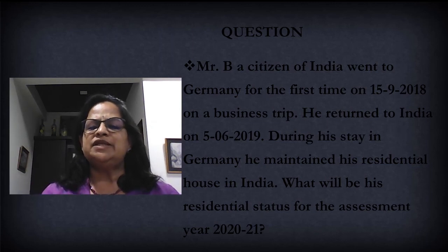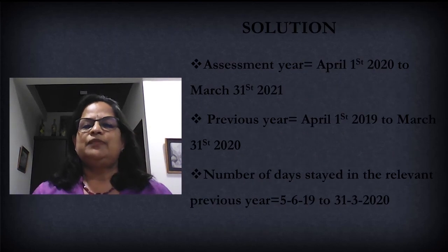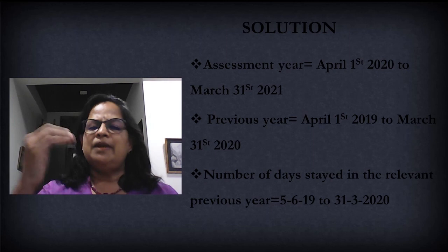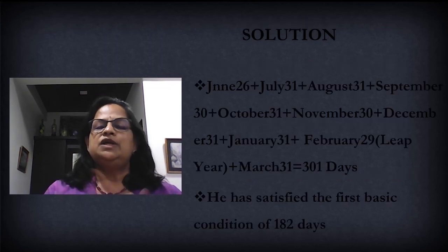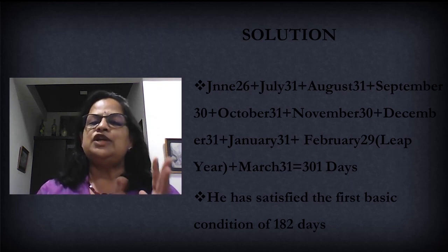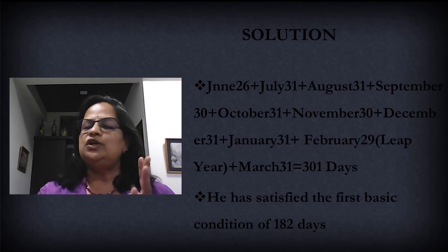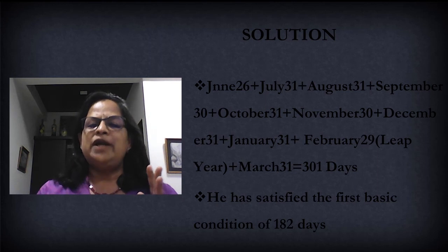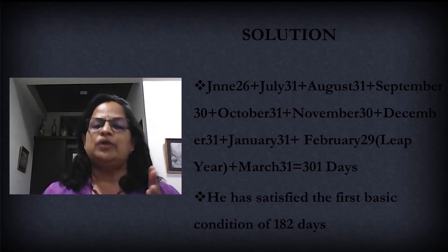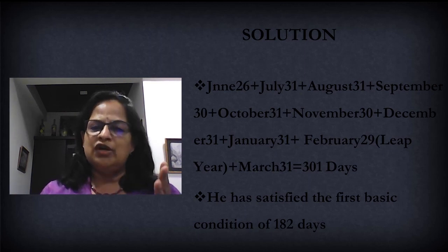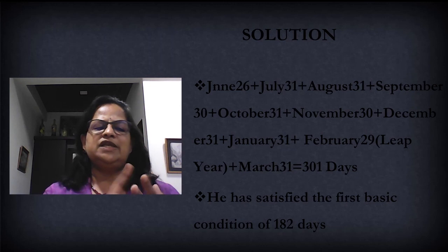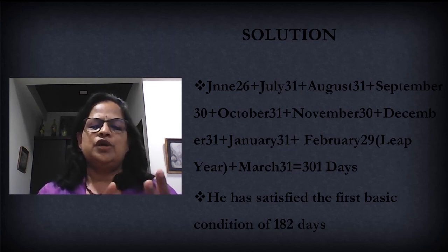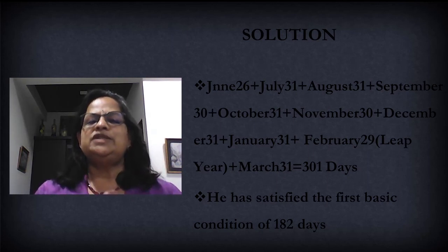What will be his residential status for assessment year 2021? Write the assessment year and previous year. Number of days stayed in the relevant previous year: June 5th, 2019 to March 31st, 2020. In between the month, you calculate using your fingers — you cannot do 30 minus 5, that gives only 25 which is wrong. Day of arrival is also counted. Counting: 5, 6, 7, 8... through to 30 — June gives 26 days.